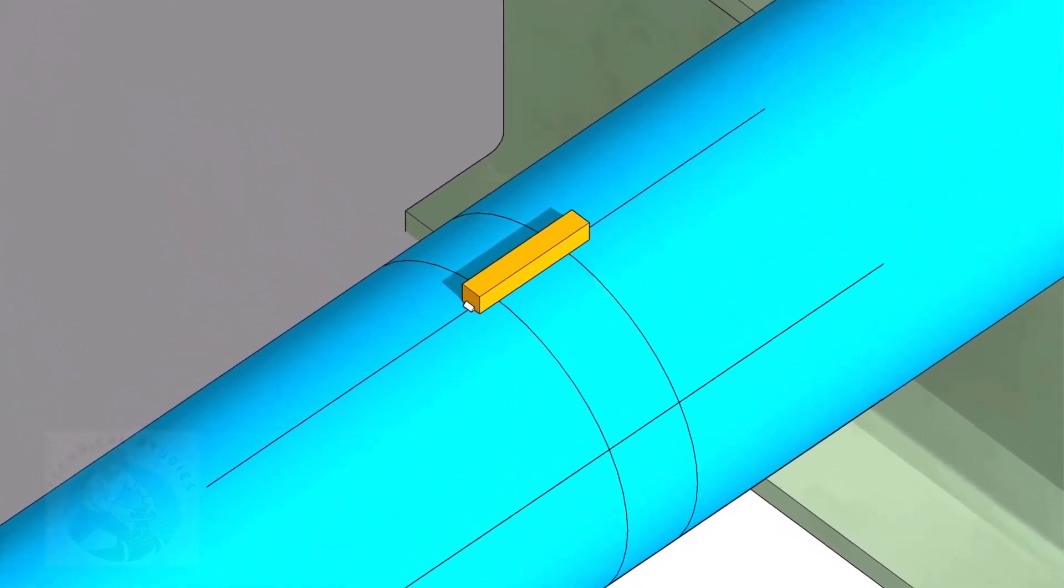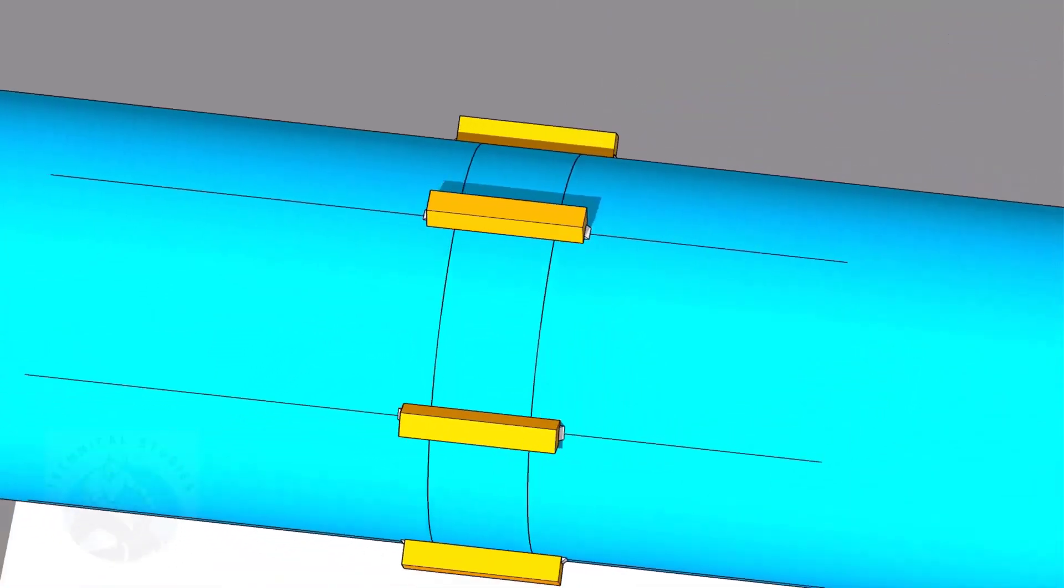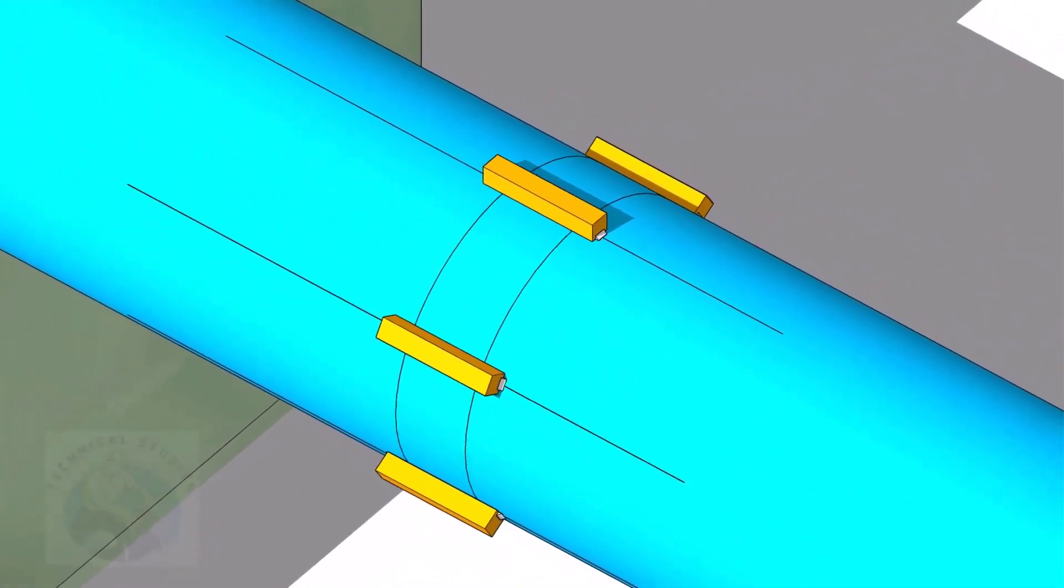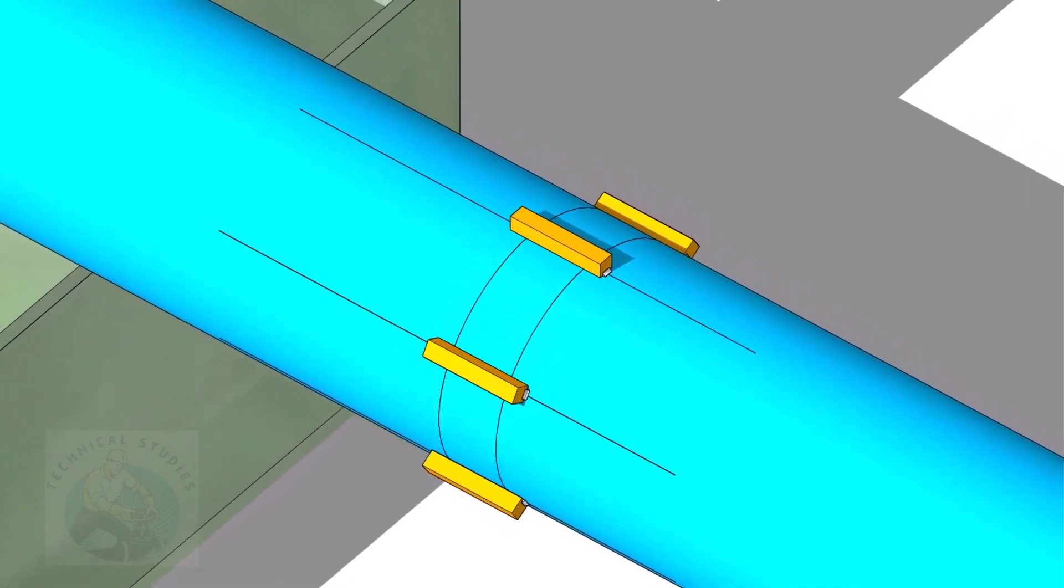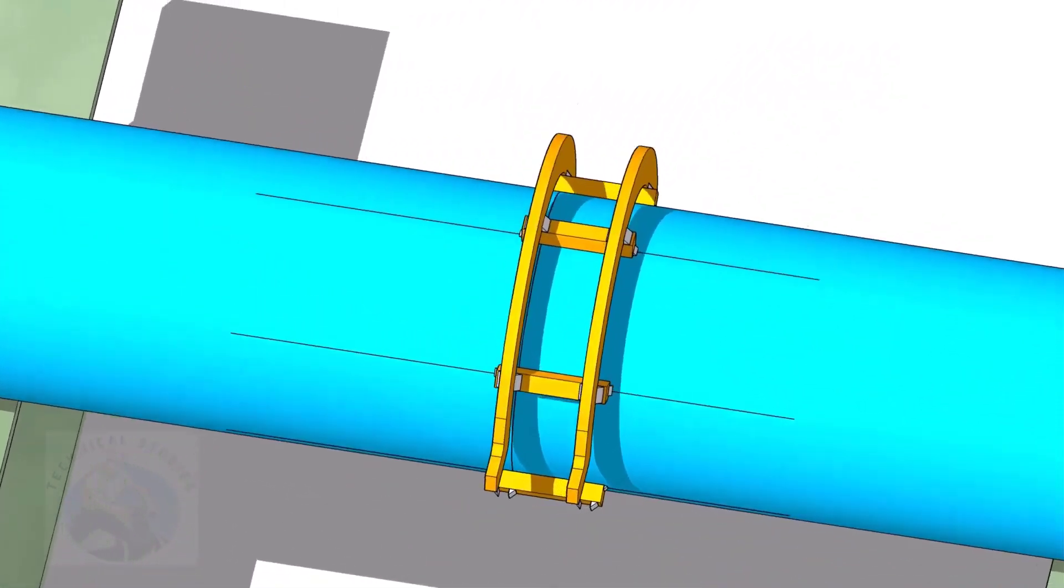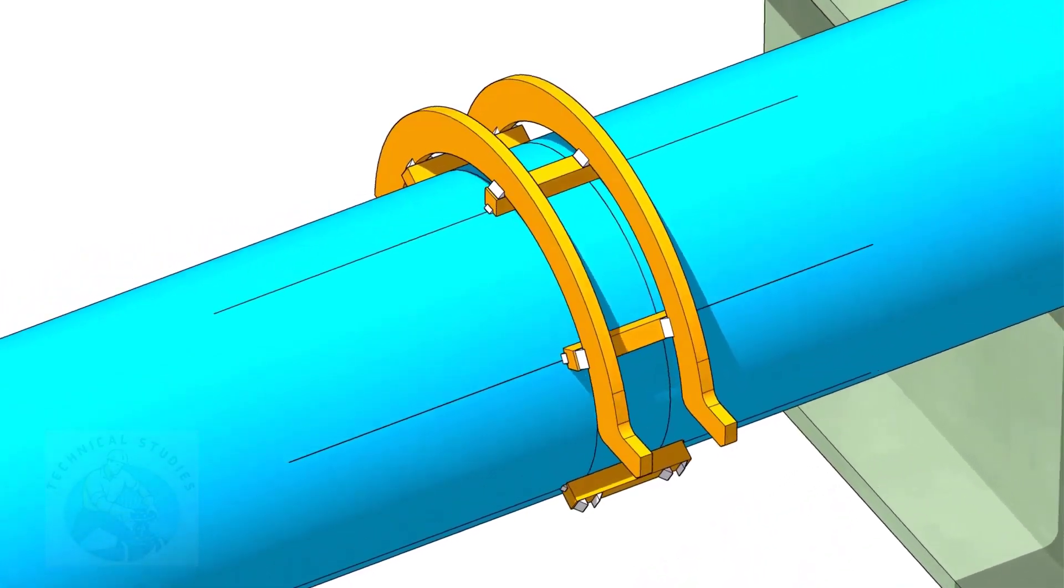Tack weld the square bars on the pipes as shown. Do not weld two big tacks. Tack weld the top half rings carefully on the square bars.